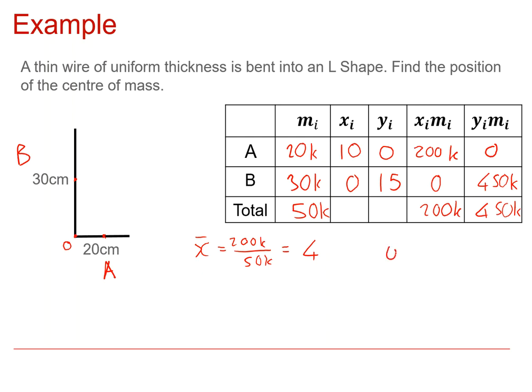We do the same thing for the y-coordinate. So we'll be doing 450k divided by 50k, and that is clearly 9. So the centre of mass is at coordinate (4, 9).